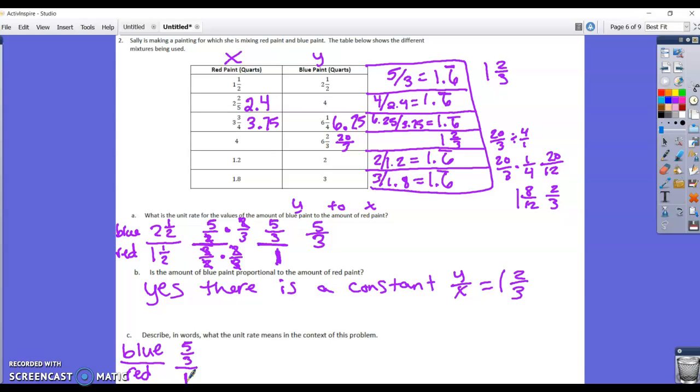Red became 1 when we did that division. So for five-thirds, let's change that to a mixed number. Three will go into five one time with two left over, two-thirds. So one and two-thirds. And we're doing quarts. I'm looking back at my table to see. Quarts of blue paint for every one quart of red.